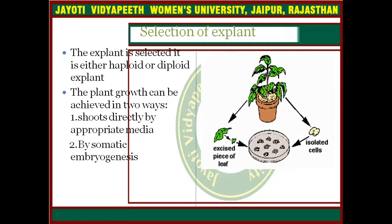Coming to the selection of explant: the explant is selected, and it may be either haploid or diploid. You can select from both. Plant growth can be achieved in two ways: first, shoot directly by the appropriate media, or you can develop somatic embryogenesis first — creating a somatic embryo — and then go for plant regeneration.